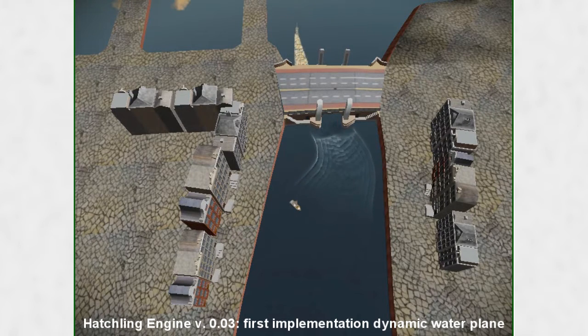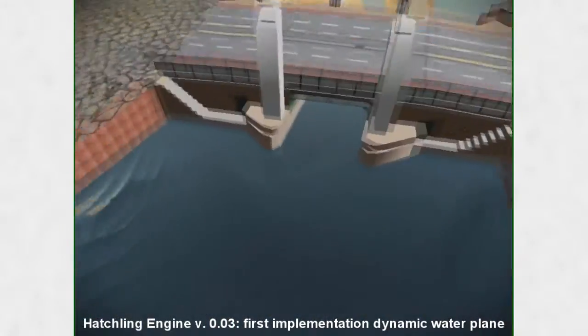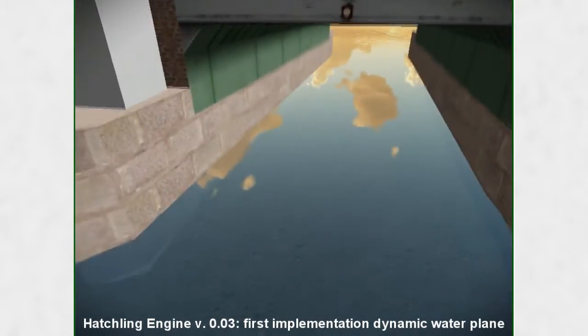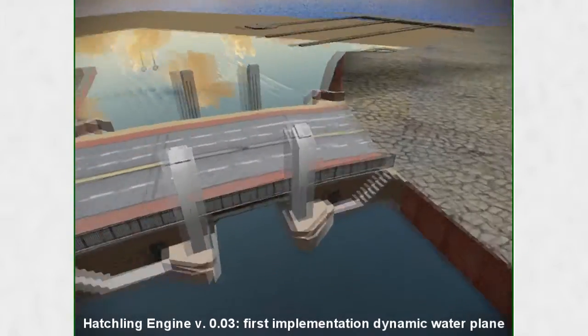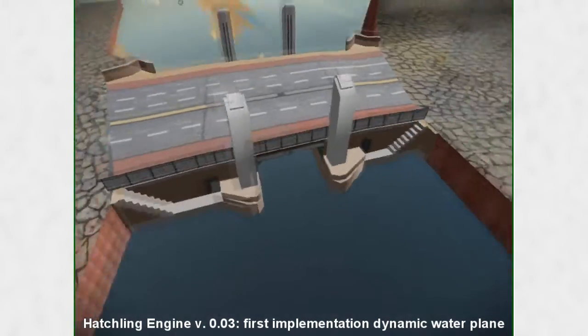There's still some minor issue as you can see when I move under this bridge. The engine still thinks that under this bridge is a static object, so it will make the waves bounce off under the area of the bridge.